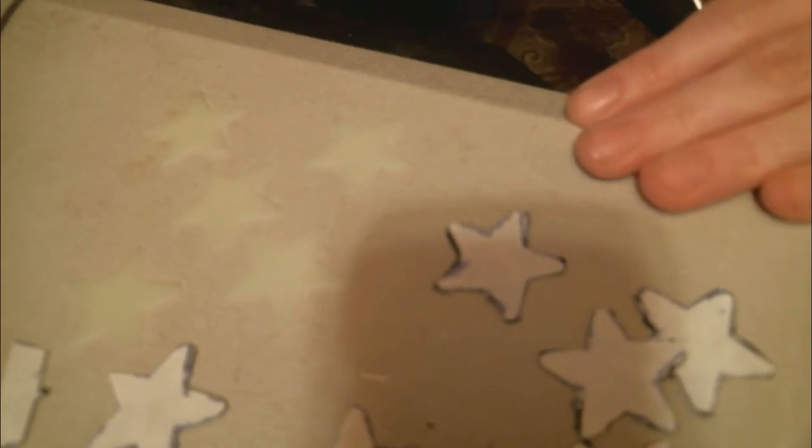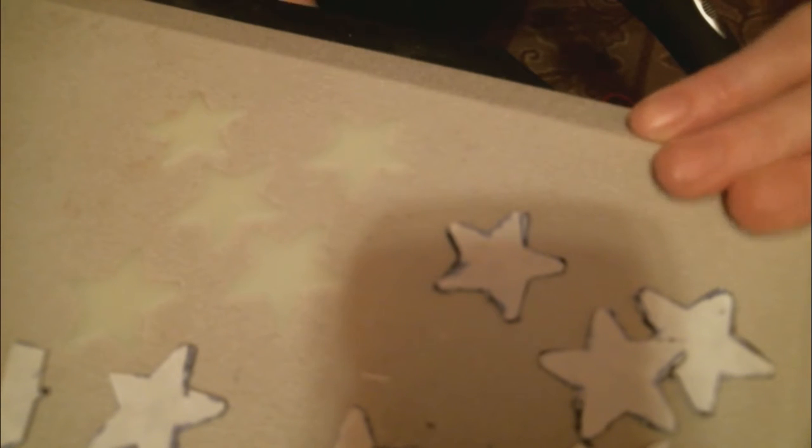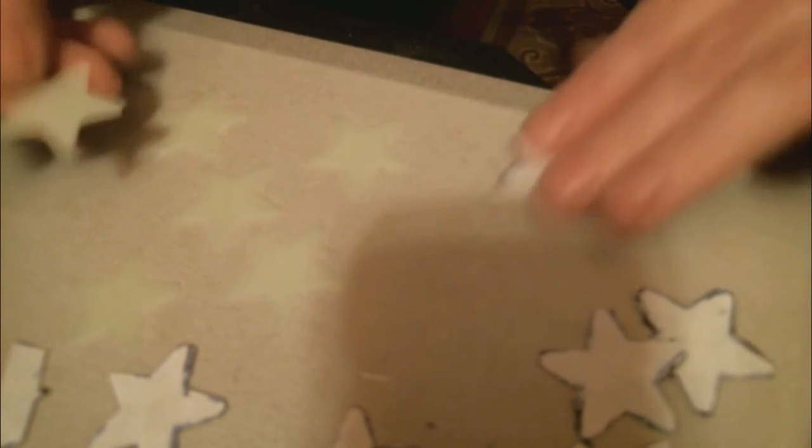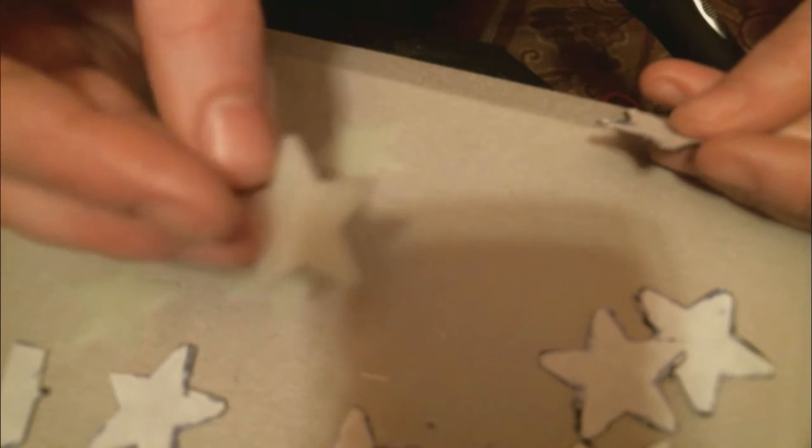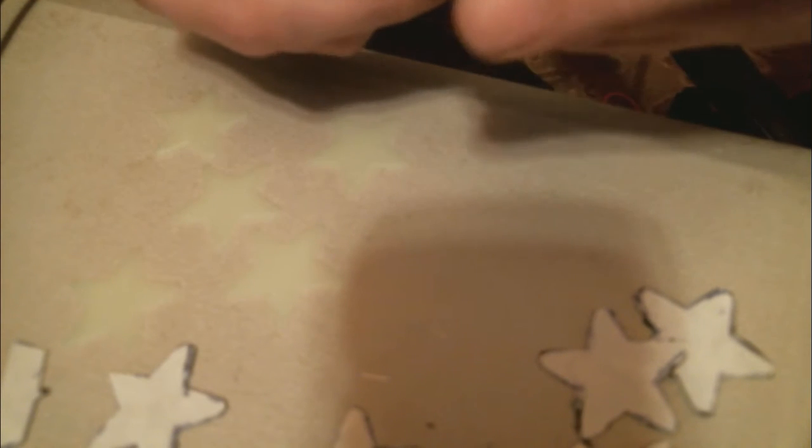So when you're done cutting out the shapes, you're going to take out the stars. I think that this was about six stars, I believe. You're going to take the star, you can put whatever side you want down. I decided there was a little bit flatter of a side on these stars, so I decided to use that.